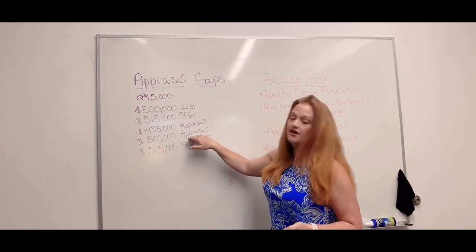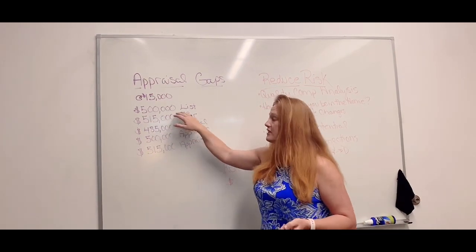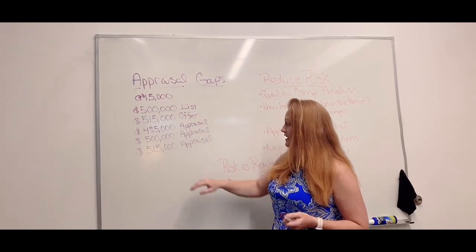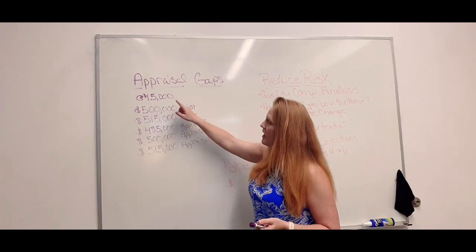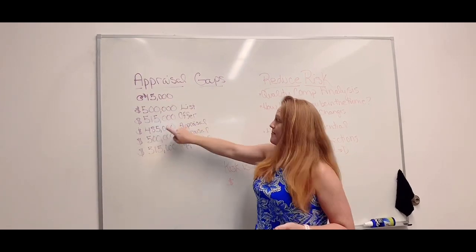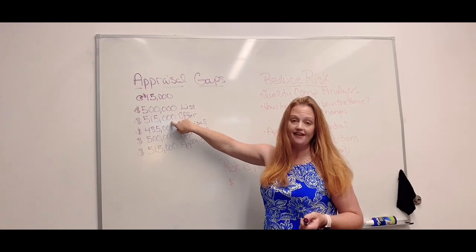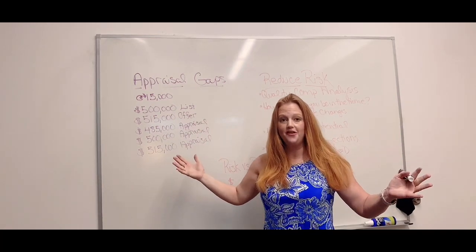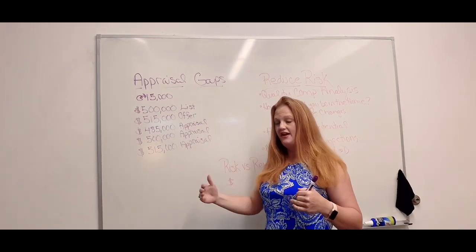Now, let's say the appraisal comes back at $500,000, which was also the list price. Good job, agent. You got it right on the head. But you have a $15,000 appraisal gap and you actually offered $515,000. There's a $15,000 difference there between the appraisal and the purchase price.